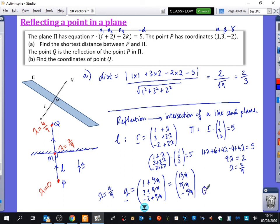So the coordinates of Q are 13 over 9, 35 over 9, and minus 10 over 9. Can I just multiply them all by 9 to give a nicer looking thing? No, because it's a coordinate, it's a position. If you multiply it by 9, it's gone somewhere completely different.